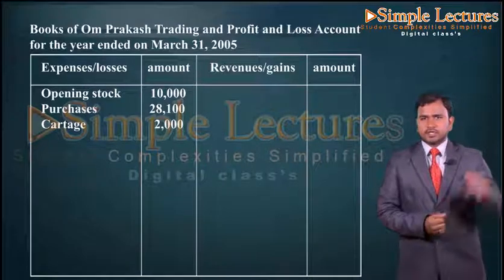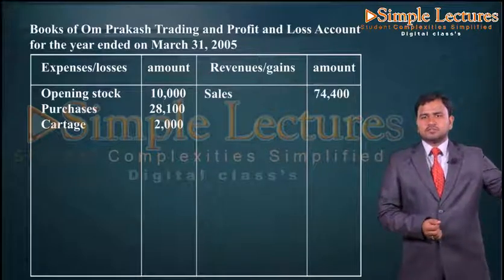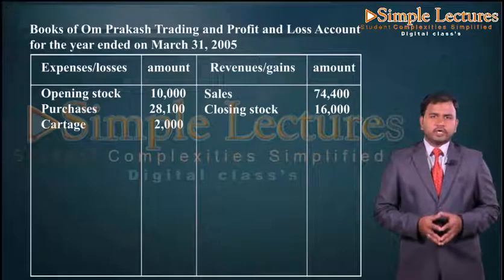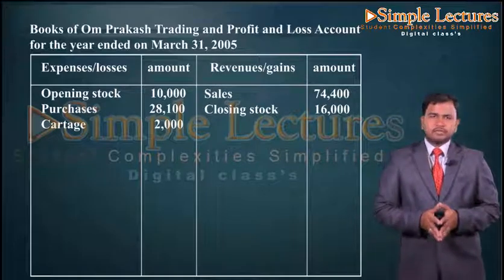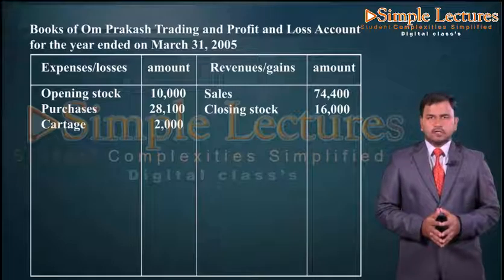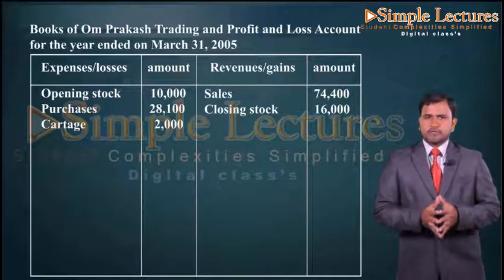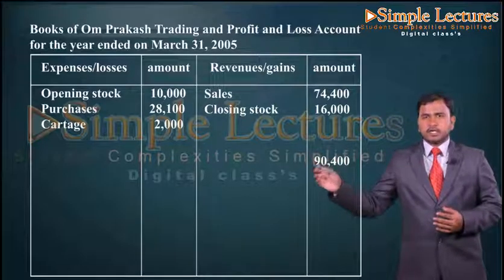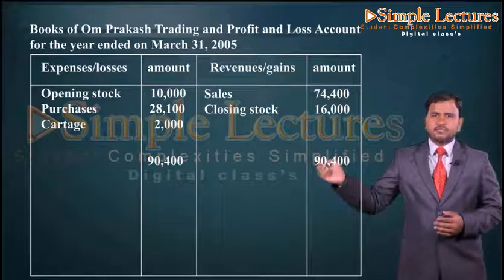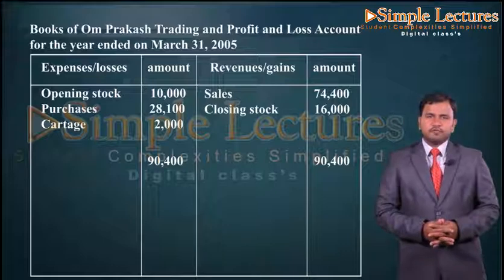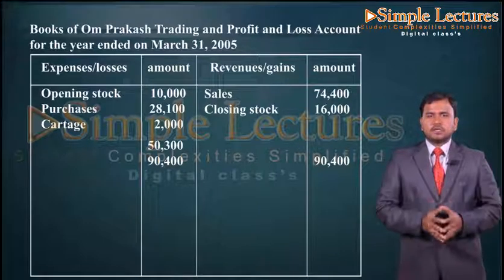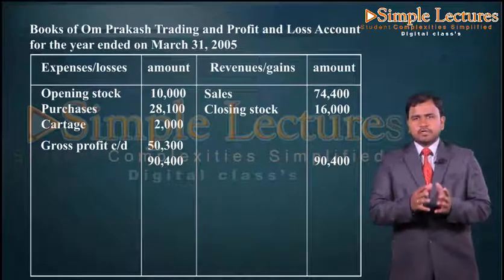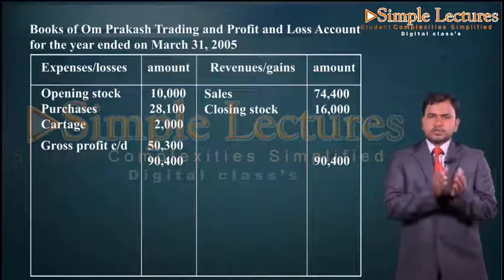On the credit side we record sales: seventy four thousand four hundred, and closing stock: sixteen thousand. The total of the credit side is ninety thousand four hundred; the same total is recorded on the debit side. The difference is fifty thousand three hundred, which is nothing but gross profit carried down. This is the end of the trading account, which continues into the profit and loss account.